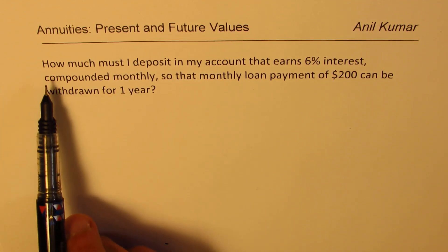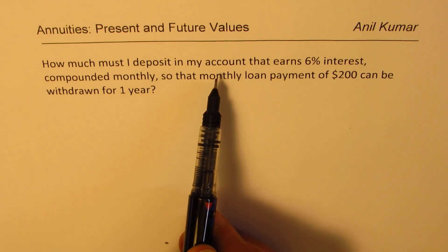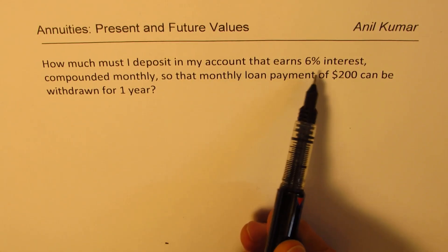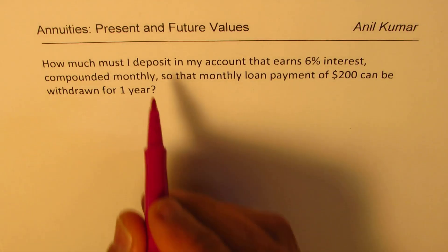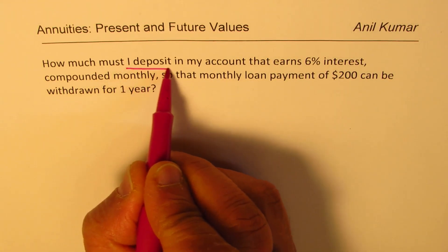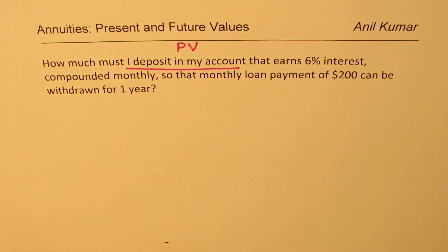Clearly, it says how much must I deposit in my account, so you're depositing now. That earns this much interest. So from the question, if you read carefully, you know what you're trying to find. How much must I deposit in my account? It means present value. So we need to find the present value.